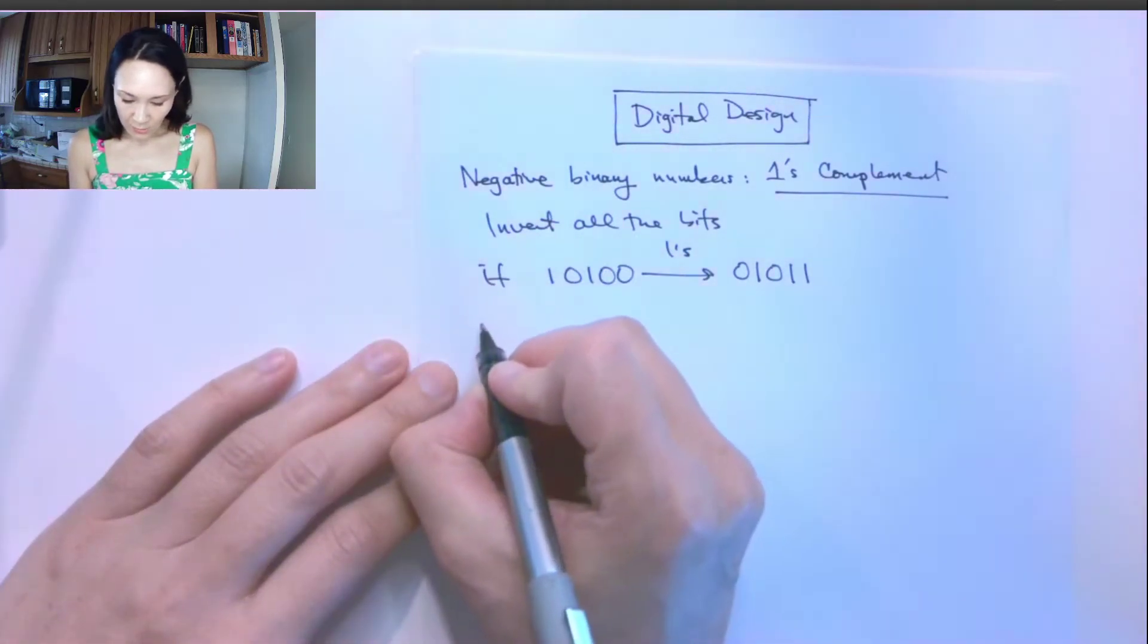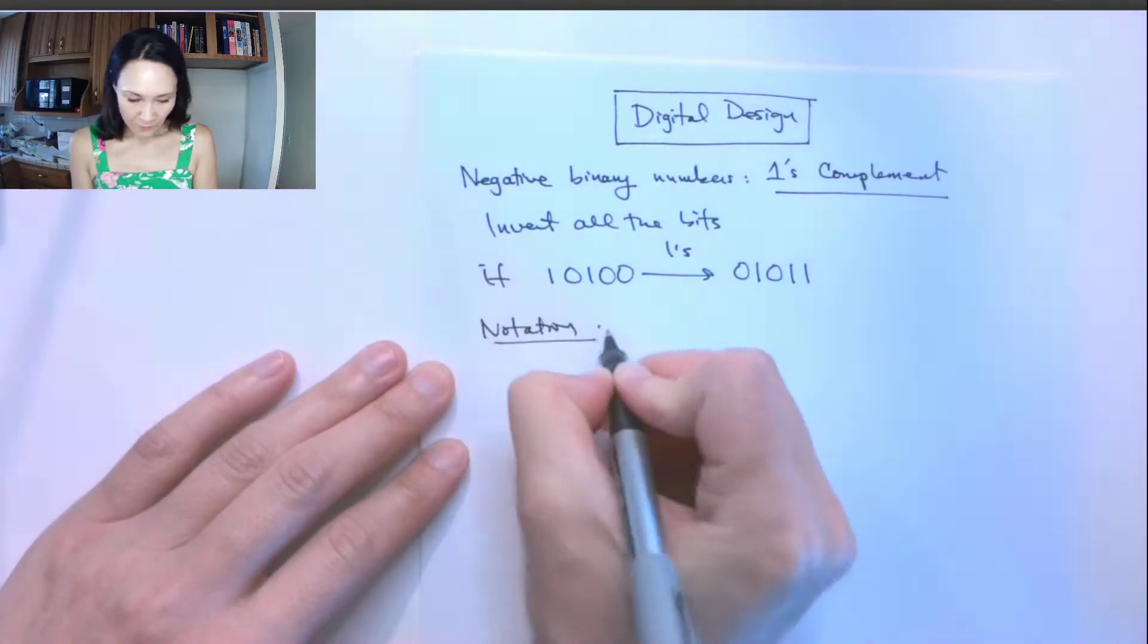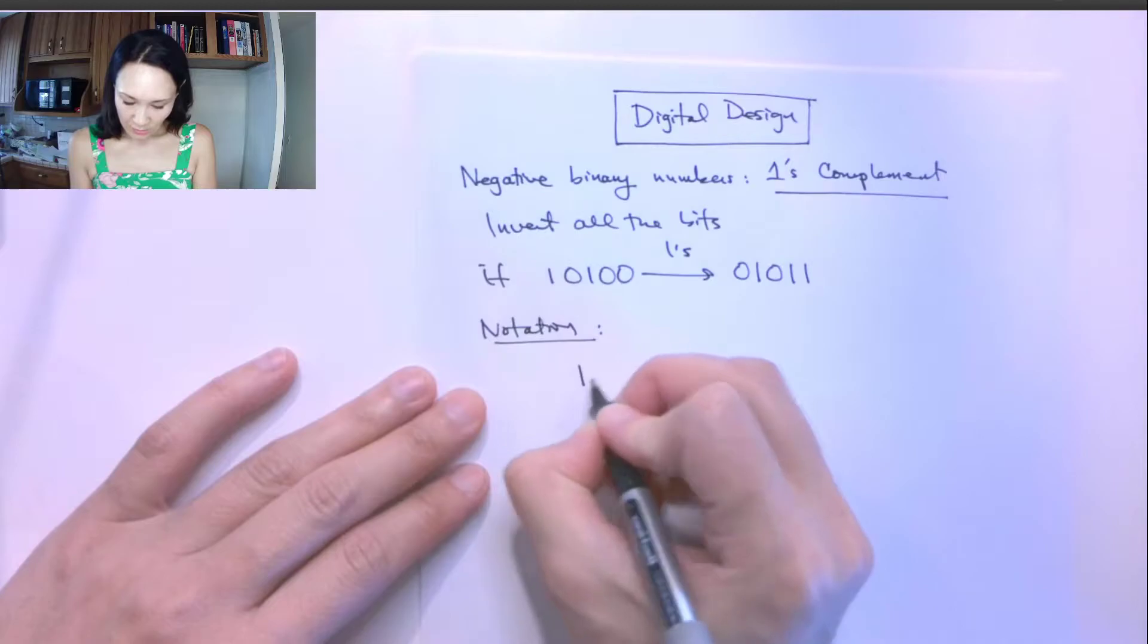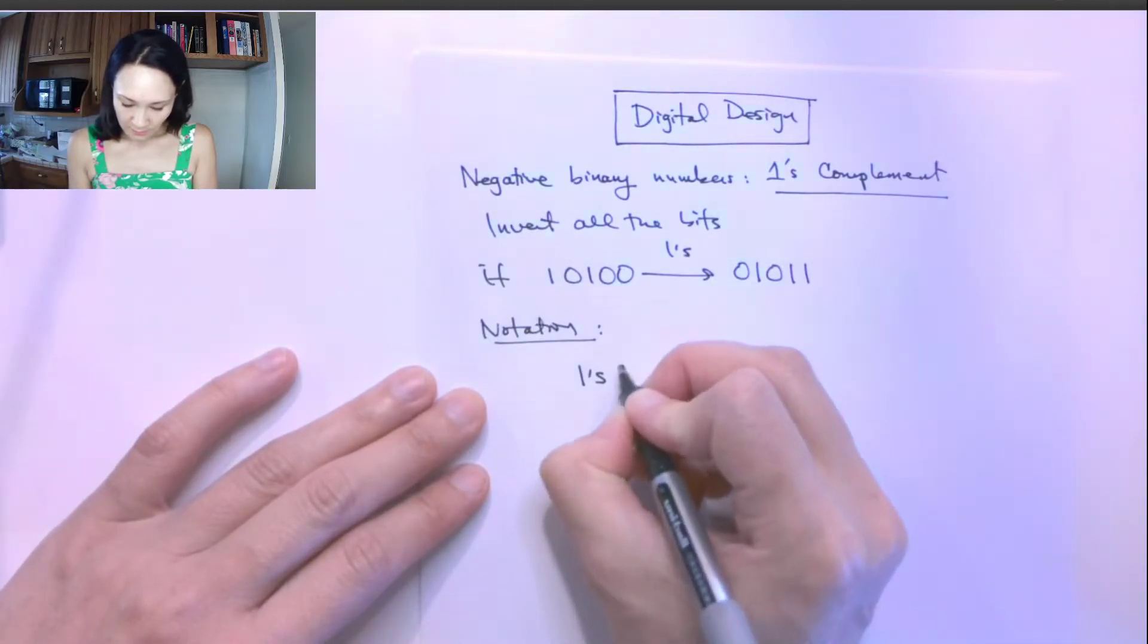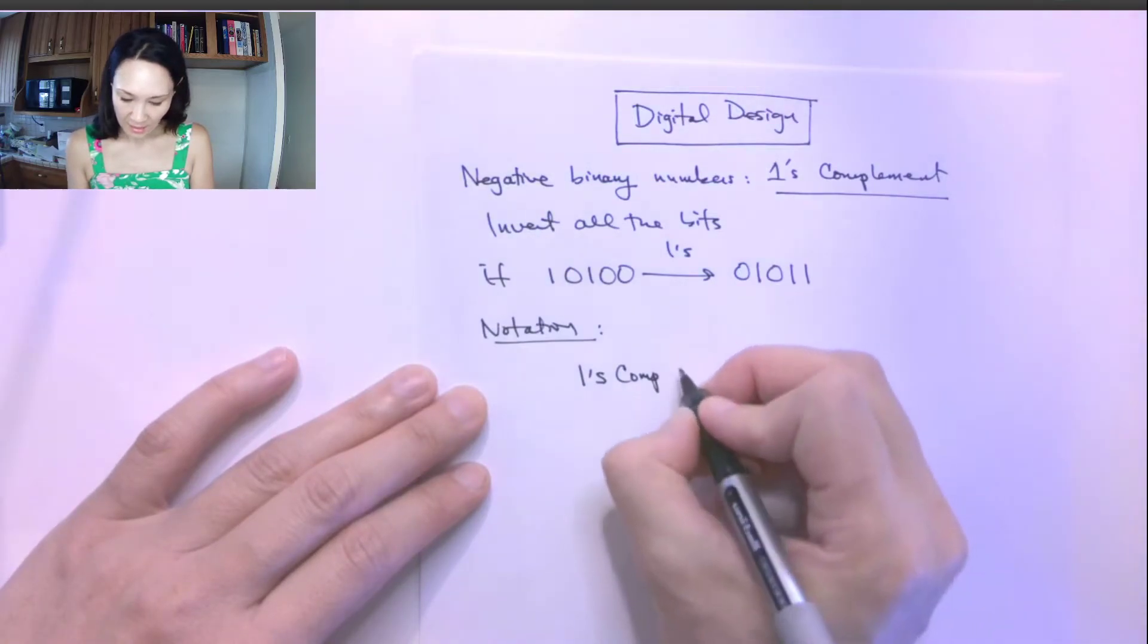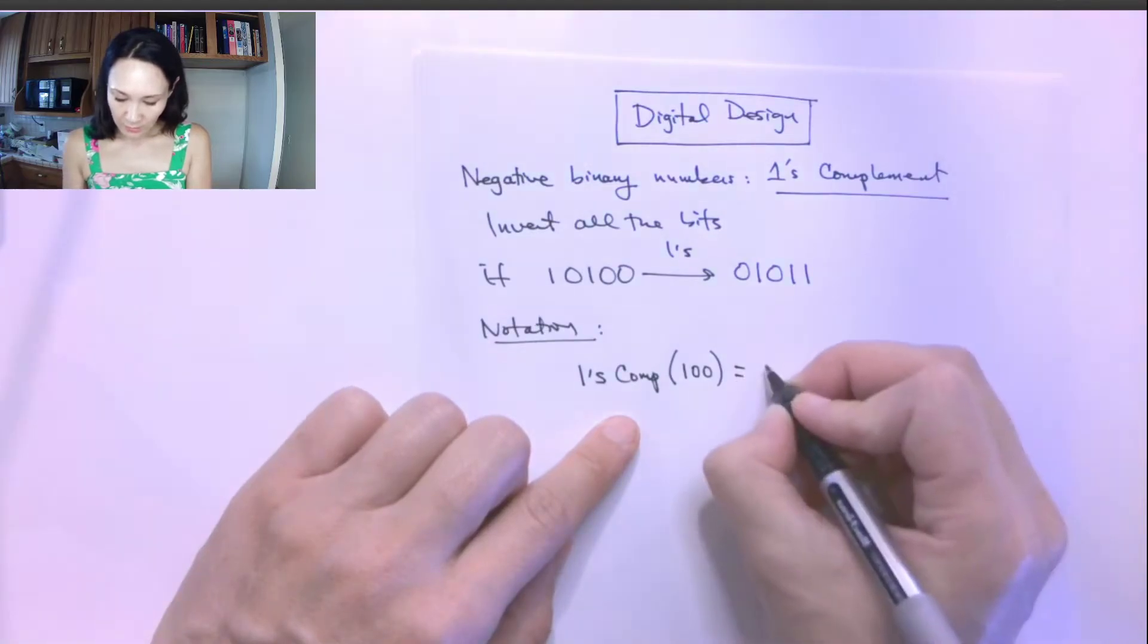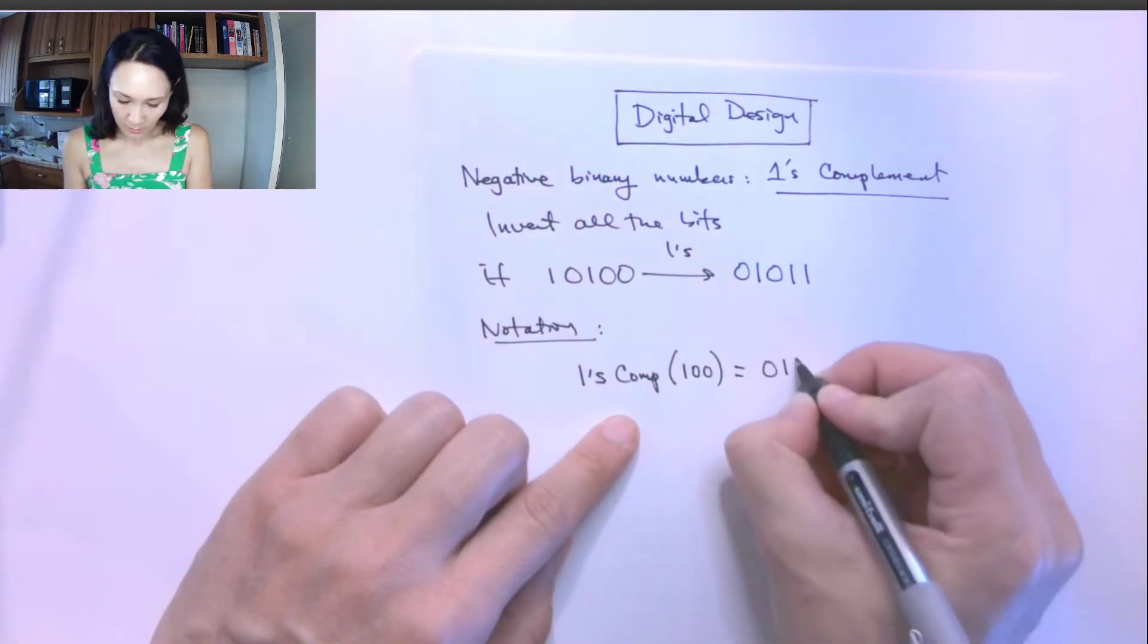So a common notation that we'll use in this class is this. This is like a function notation. So we have ones comp, or maybe I'll just put a C or something like that of, let's say, 100. And then the result of that would be 011.